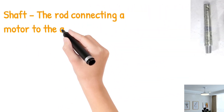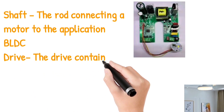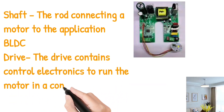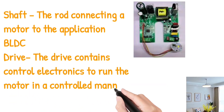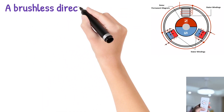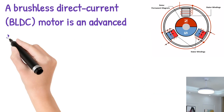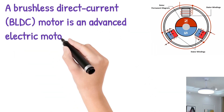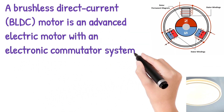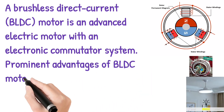Shaft: the rod connecting a motor to the application. BLDC drive: the drive contains control electronics to run the motor in a controlled manner. A brushless direct current (BLDC) motor is an advanced electric motor with an electronic commutator system.